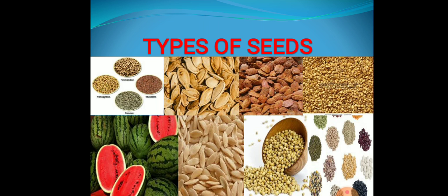In this picture, you can see there are different seeds and they have different uses. Some seeds are used as spices — which seeds are used as spices? Cumin seeds, cardamom seeds, mustard seeds. In this picture you can see they are used as spices. Spices are used to add flavor and taste to food, so these spices are very important.